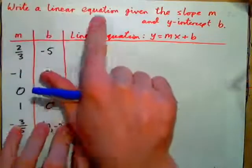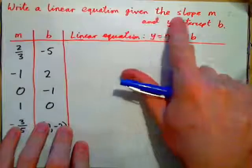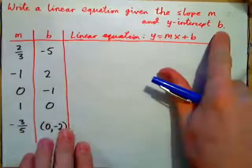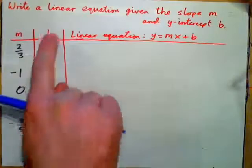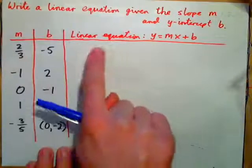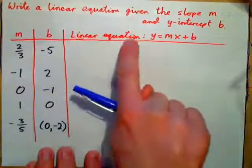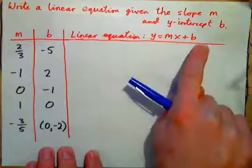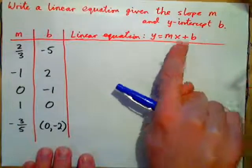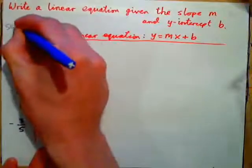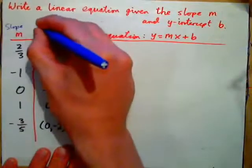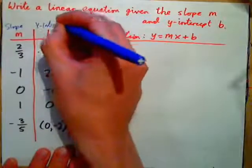We've got to write a linear equation given the slope m and the y-intercept b. So if our slope is m and our y-intercept is b, the slope-intercept form of a linear equation is y equals mx plus b. m is always the slope, b is always the y-intercept of the line.